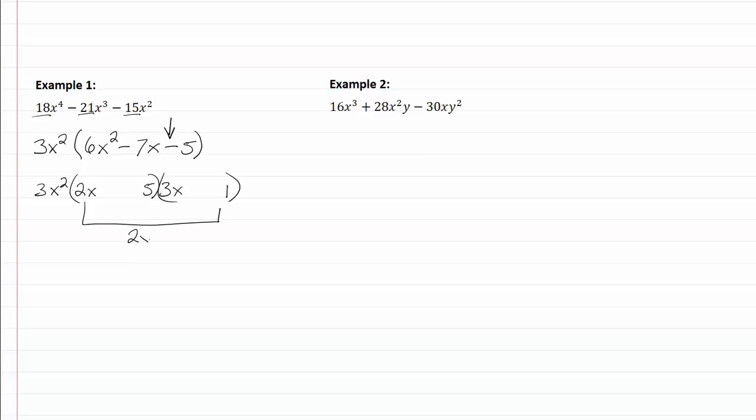I have 2x minus 15x, which will give me a negative 13x. Well, I have the sign right, but I need 7 and not 13.